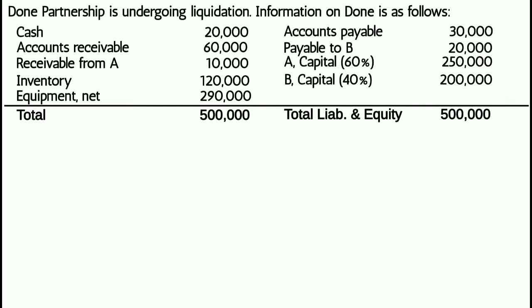Let us now apply the concepts by answering problems. Don Partnership is undergoing liquidation. The balance sheet shows: cash 20,000 pesos; accounts receivable 60,000 pesos; receivable from A 10,000 pesos; inventory 120,000 pesos; equipment net of accumulated depreciation 290,000 pesos — total assets 500,000 pesos. Liabilities and equity: accounts payable 30,000 pesos; payable to B 20,000 pesos; A capital (60%) 250,000 pesos; B capital (40%) 200,000 pesos — total liabilities and equity 500,000 pesos.